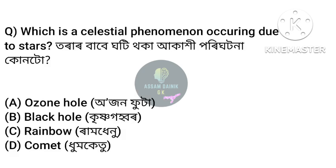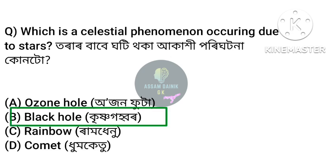Which is a celestial phenomenon occurring due to stars? — Anchar Option B: Black Hole. Black Hole is a celestial phenomenon that occurs due to stars.